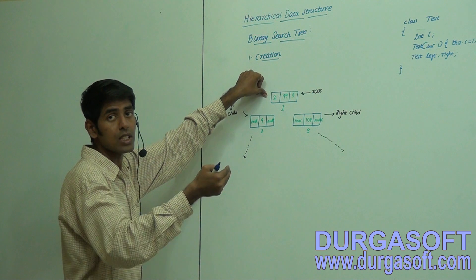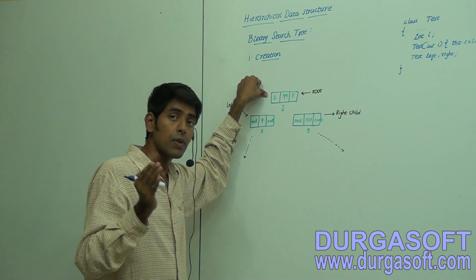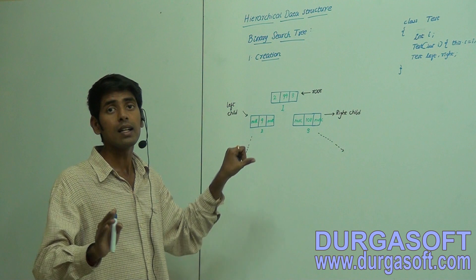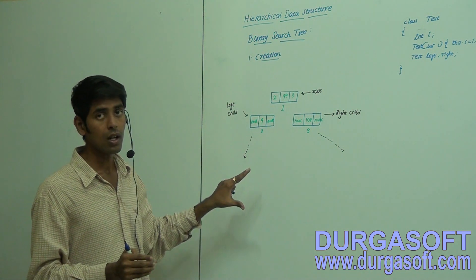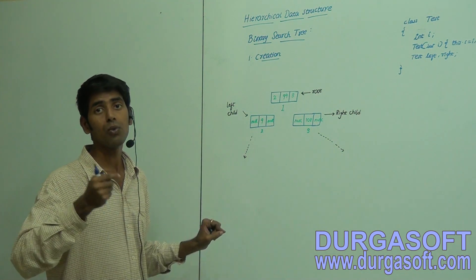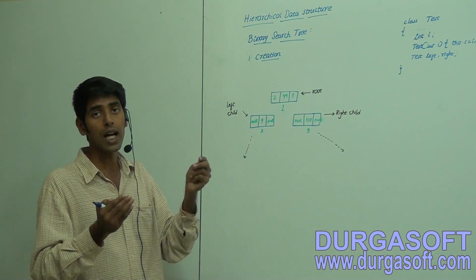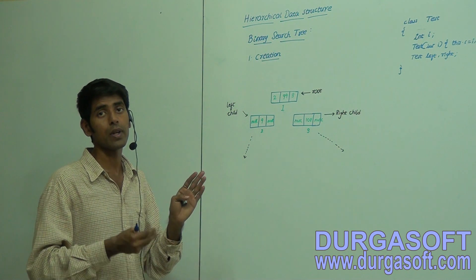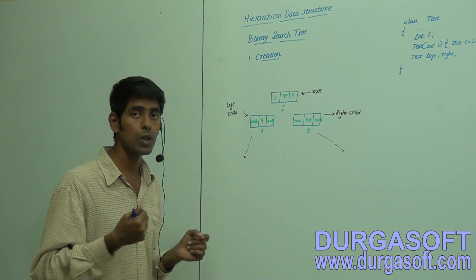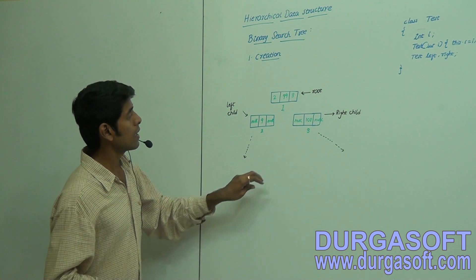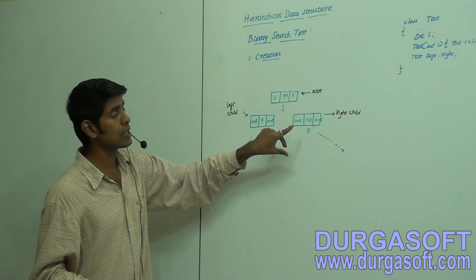We are going to see how to develop those things. If you are comfortable with circular doubly linked list and doubly linked list, these things will be very easy — everything will be on your fingertips. You just need to know the process, and if I write the code you will definitely be in sync with me. The right child node must and should contain data greater than the root node.